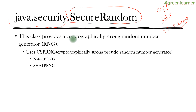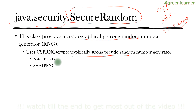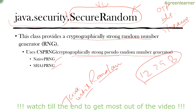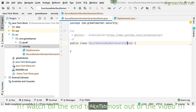This class provides a cryptographically strong random number generator algorithm — specifically a cryptographically strong pseudorandom number generator (CSPRNG). Some algorithm names include NativePRNG and SHA1PRNG, among others. The algorithm name depends on the operating system you're working on. Let's go ahead and see this in a program and how we can make use of the SecureRandom algorithm.